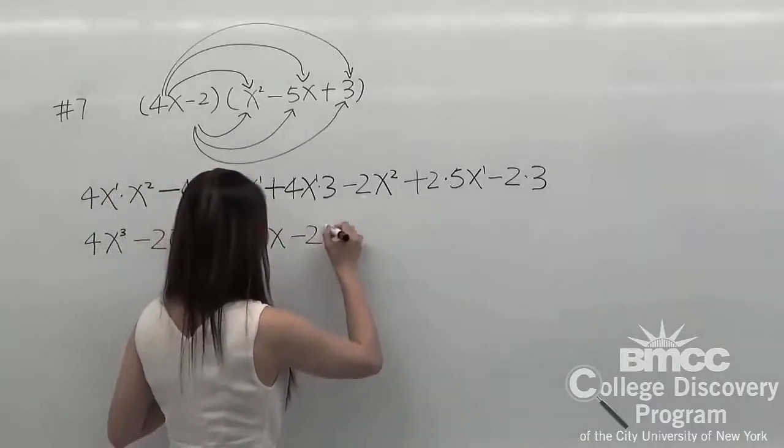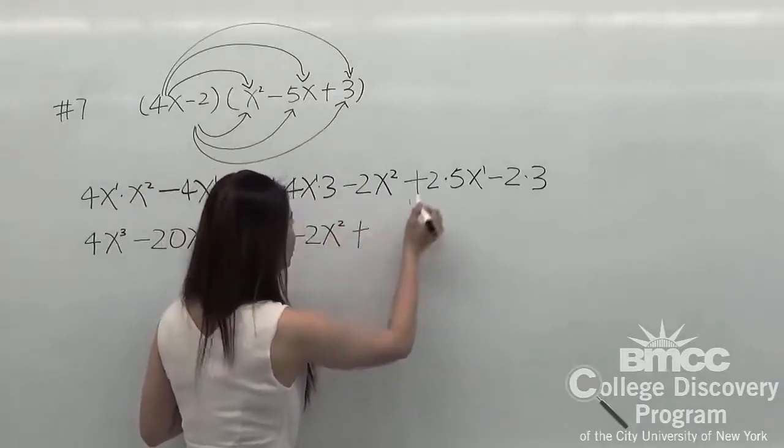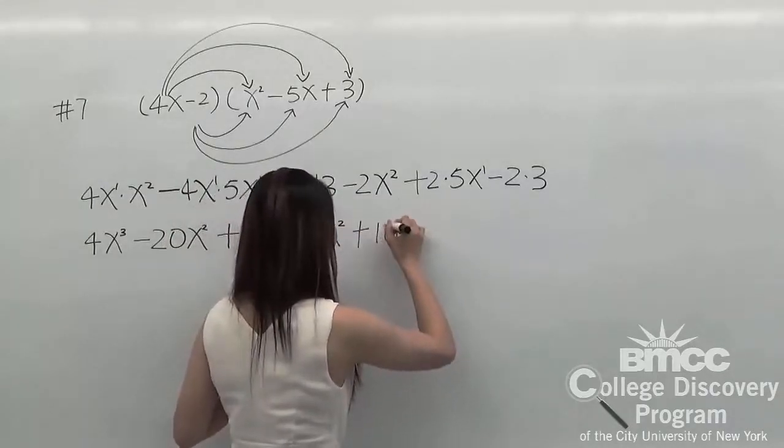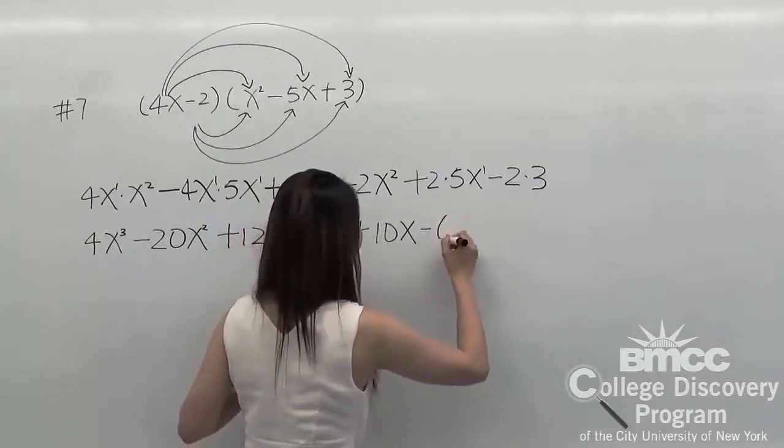Minus 2x squared, we keep it. Plus 2 times 5, it will be 10x. And minus 2 times 3, it will be 6.